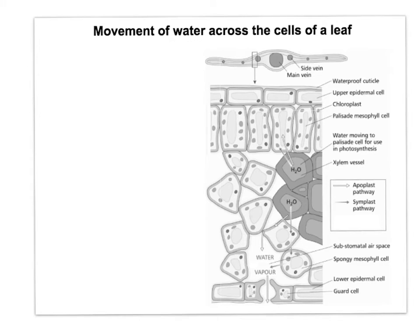Water moves across a leaf as follows. First of all, water evaporates through the stomata — whenever the stomata are open, water will evaporate out of them. A plant can close the guard cells to close the stomata and reduce water loss. If the guard cells have opened the stomata and water evaporates, that creates a lower water potential in the airspaces and cells in the spongy mesophyll.